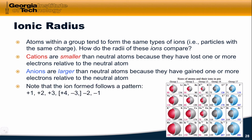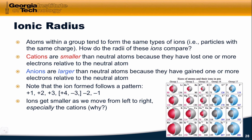Note that the ion formed follows a pattern: plus one, plus two, plus three across the period — plus four and minus three for groups 14 and 15 — then minus two and minus one. As we move from left to right, the ions get smaller, especially the cations. For example, rubidium plus, strontium two plus, and indium three plus get smaller and smaller.